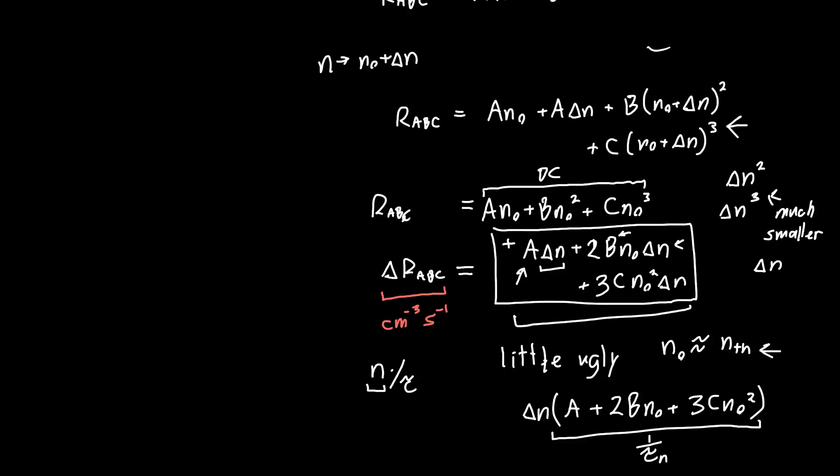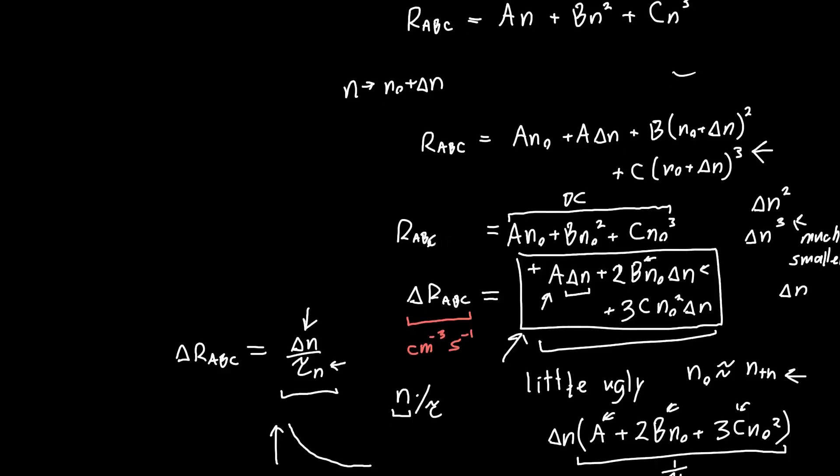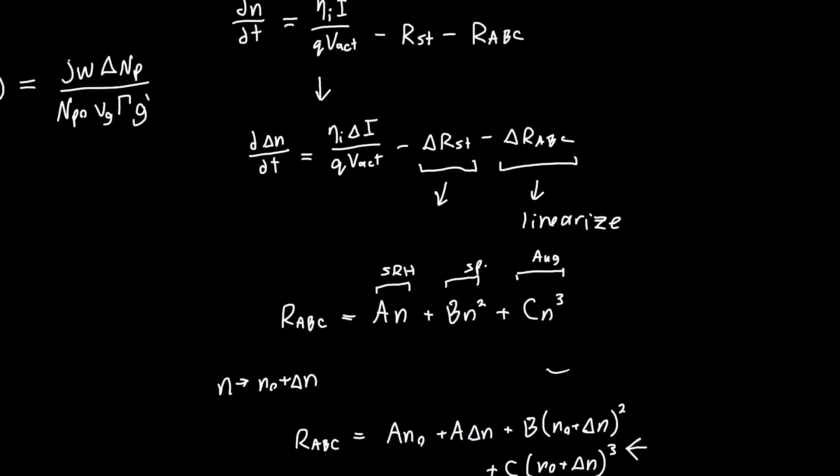We can calculate that time constant because we can calculate the carrier density and we're generally given a, b, and c. Our delta ABC recombination we can just write as delta n divided by tau n, and that's much prettier than dragging around all of these coefficients. This makes our life much easier. It's also kind of cool because we can interpret this as the time constant or the relaxation constant for carriers - if we add a certain number of carriers they're going to decay after a certain time period and that time constant is given by tau n. Now we can plug this in back up here, so instead of delta r ABC we'll just say delta n over tau n, and we know what tau n is now.